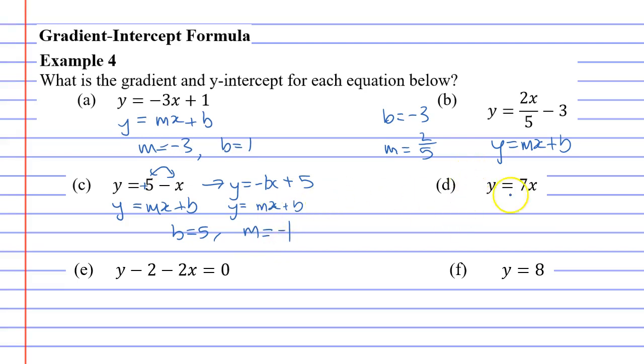Looking at question D, once again, y equals mx plus b. But notice that there's no b at the end, and I like to imagine it saying plus 0, because whenever we plus 0, it doesn't change anything. Then we can just say the gradient is 7, and the y-intercept is 0.